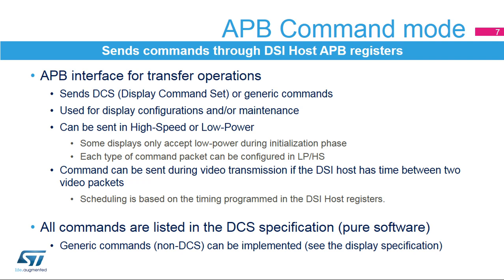APB command mode is used to send commands through the DSI host APB register interface. Generic or display command set, or DCS, commands can be sent for display configuration at startup or for maintenance operations when the application is running. All commands can be sent either in high-speed mode or in low-power modes, as some displays only accept low-power communication at startup. Commands can also be sent during video streaming; the DSI host scheduler automatically evaluates if it has sufficient time to insert a command during a video transmission according to the program timings. All commands are fully programmable by software.